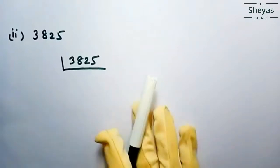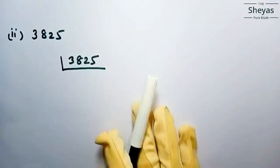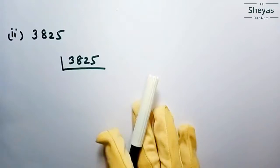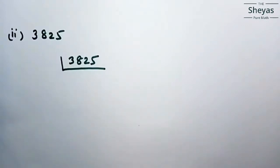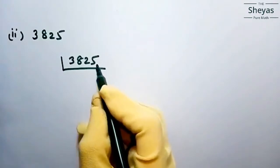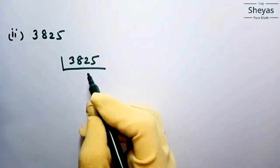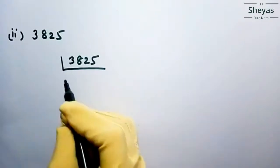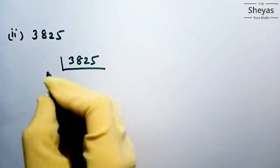As I said in the previous problem, you can start with divisibility by 2, then 3, then 5. Or in this problem you can start with 5, because the number ends with 5 — and if a number ends with 5 or 0, it is divisible by 5.